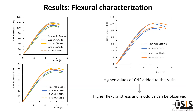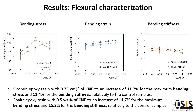To observe the different curves that represent the different percentages by weight of carbon nanofibers added to the two types of resins, the graphs show the maximum bending stress, bending strain, and bending stiffness for the different percentages of carbon nanofibers added.